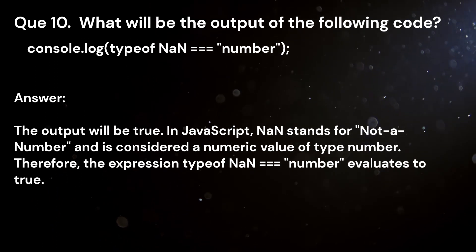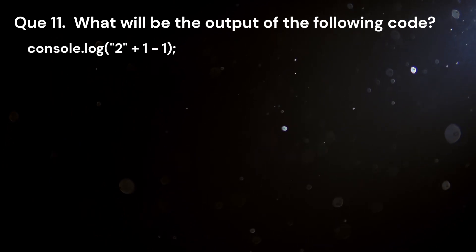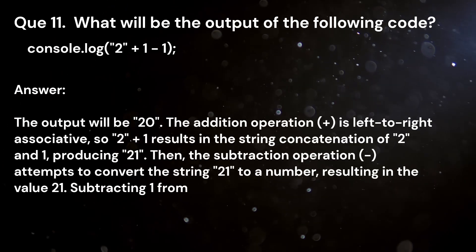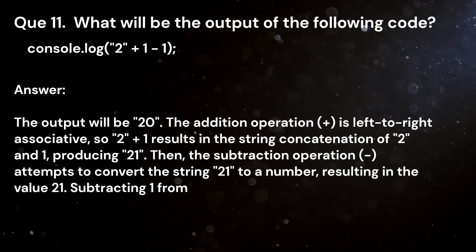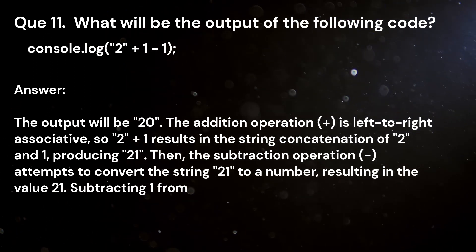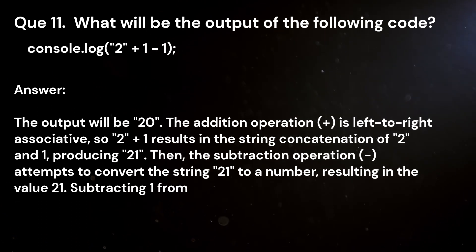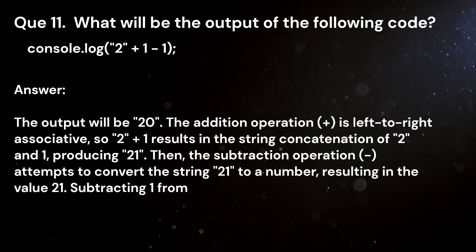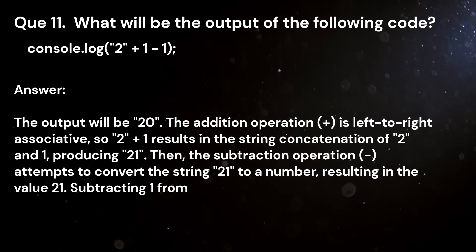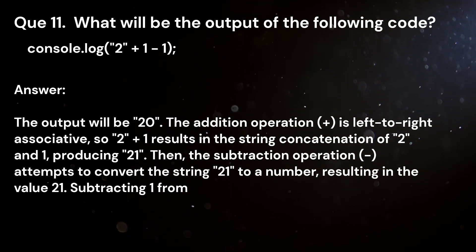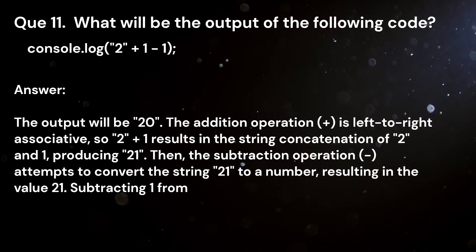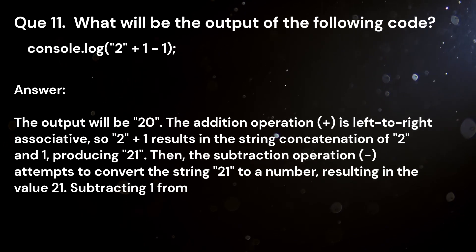Question 11. What will be the output of the following code? console.log("2" + 1 - 1). Answer. The output will be 20. The addition operation is left to right associative, so "2" + 1 results in the string concatenation of "2" and 1, producing "21". Then, the subtraction operation attempts to convert the string "21" to a number, resulting in the value 21. Subtracting 1 from 21 yields 20.